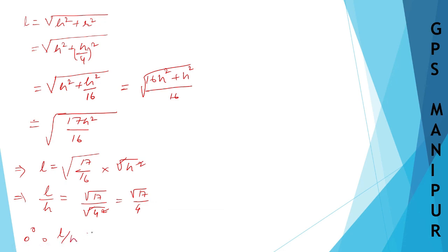Therefore, l by h is equal to root 17 by 4, or we can write l is to h is equal to root 17 is to 4. I hope you can understand this. If not, please write down in the comments below — I'm there to help you. That's all, thank you so much. We will meet in the next video.